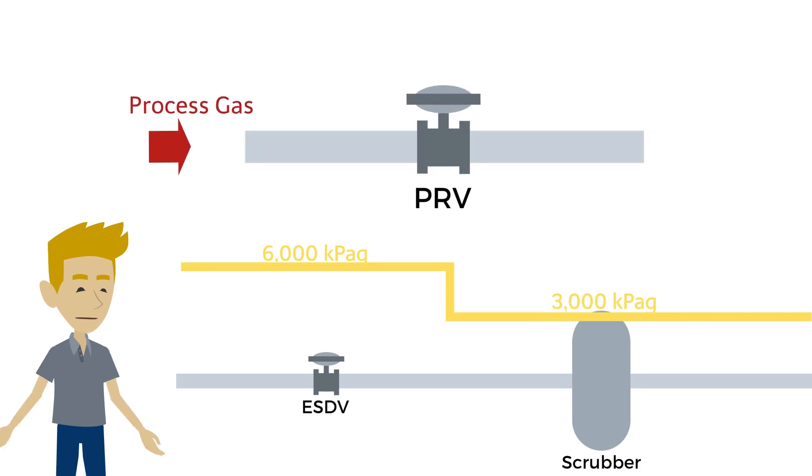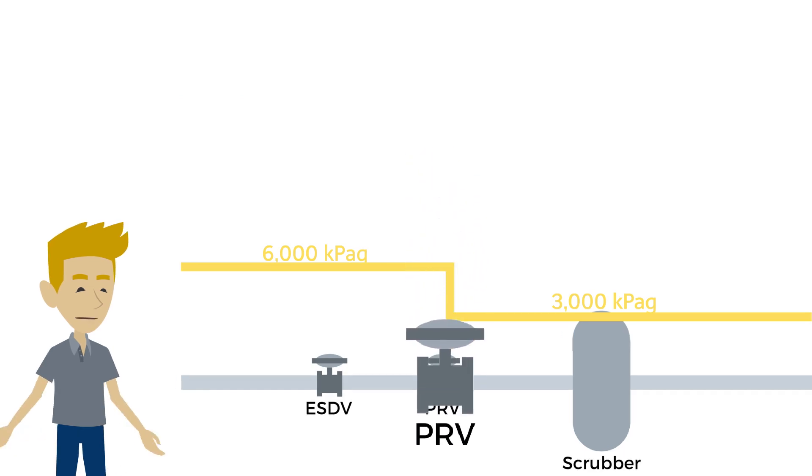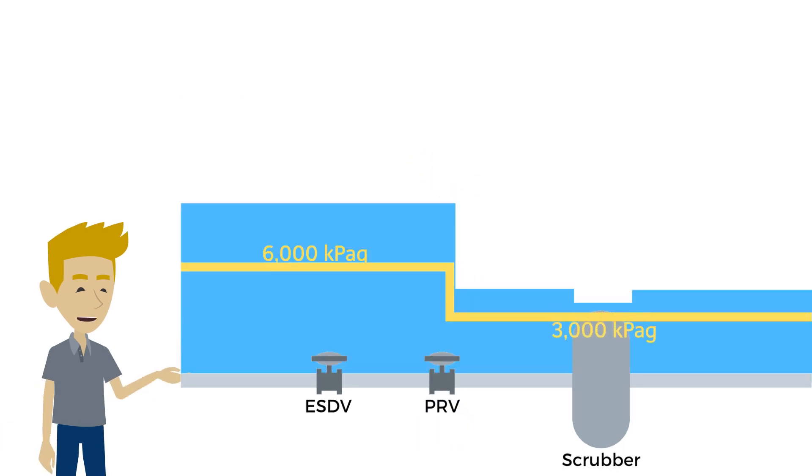We can do that with a pressure reducing valve, or PRV, upstream of the vessel. We have a spec brake downstream of this valve from 600lb piping, with MOP of approximately 10,000 kPaG, to 300lb piping with an MOP of approximately 5,000 kPaG.